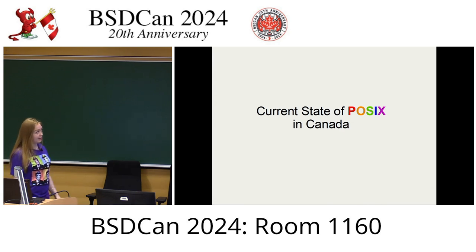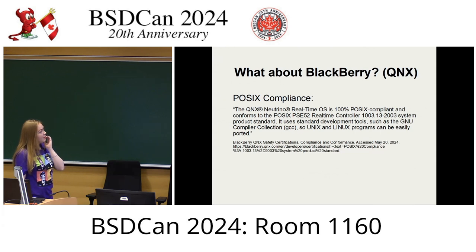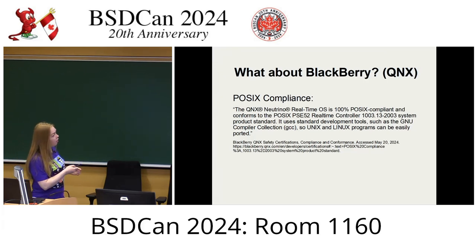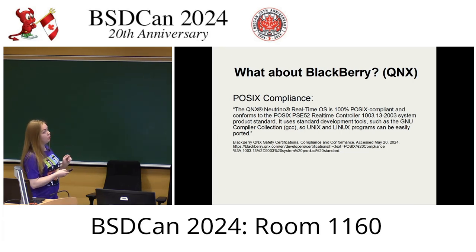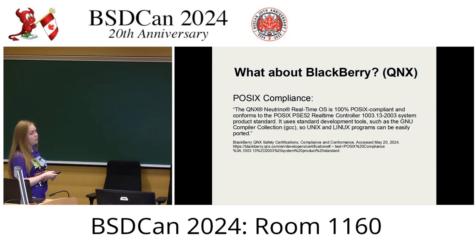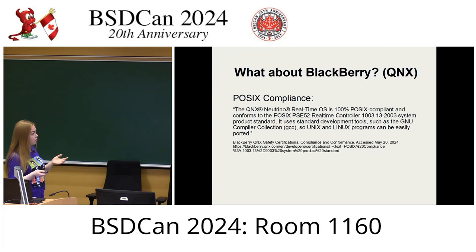What is the current state of POSIX in Canada? Jumping back to QNX Neutrino — this is what BlackBerry says on their website: 'The QNX Neutrino real-time OS is 100% POSIX compliant and conforms to the POSIX PSE52 real-time controller system product standard. It uses standard development tools such as the GNU Compiler Collection so Unix and Linux programs can be easily ported.' QNX is sitting in a gray area around POSIX certification while claiming 100% POSIX compliance — it's a really interesting case, specifically because QNX is being used and developed by BlackBerry.